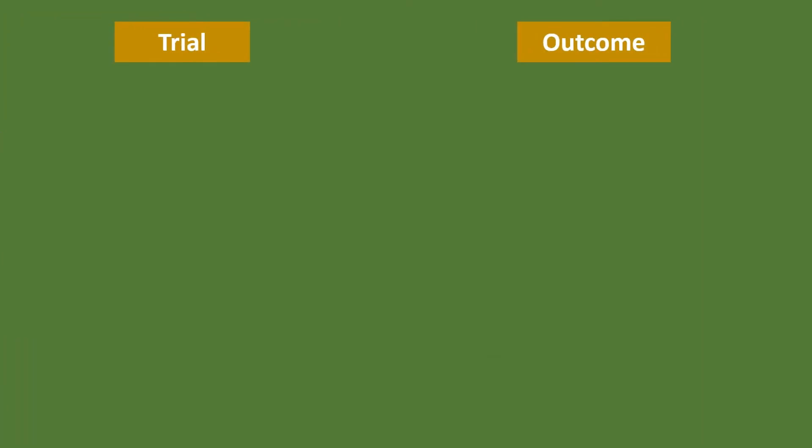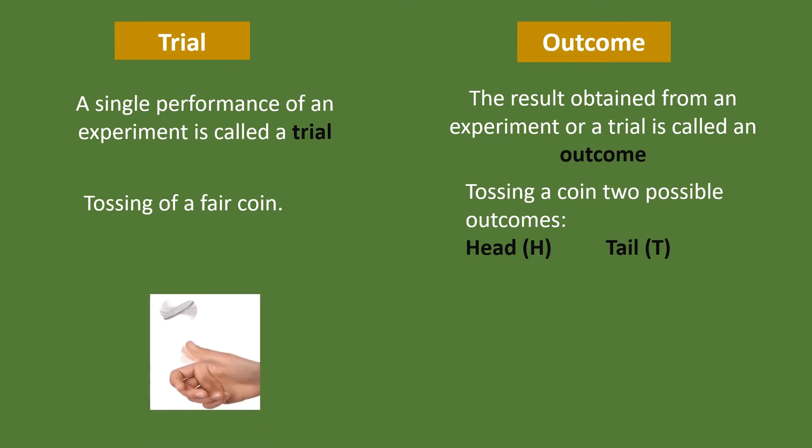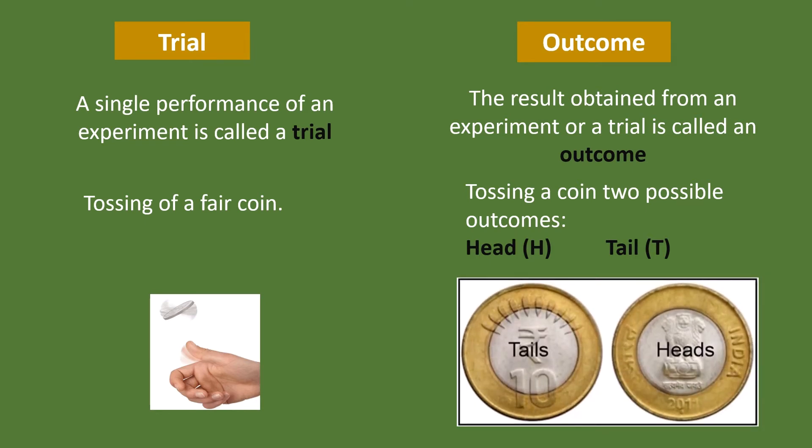Trial and outcome. A single performance of an experiment is called a trial. The result obtained from an experiment or a trial is called an outcome. For example, tossing of a fair coin has two possible outcomes: head and tail. Tossing of a coin is called a trial. Head and tail are outcomes.